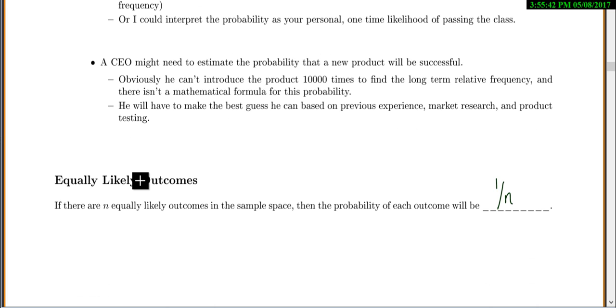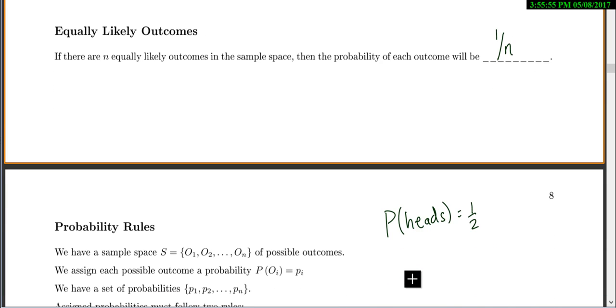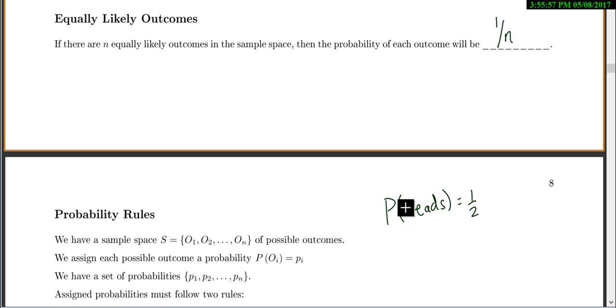Now, if you have equally likely outcomes, things like rolling a fair die or a fair coin, if there are n equally likely outcomes in the sample space, then the probability of each outcome is 1 out of n. So like the probability of heads, there are two possibilities on a coin, so the probability of heads is 1 out of 2.